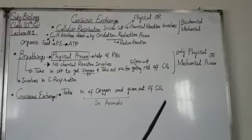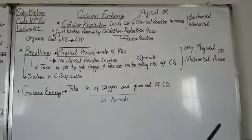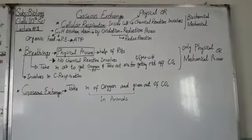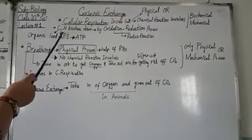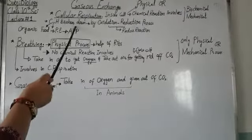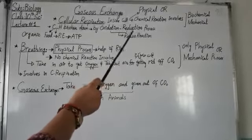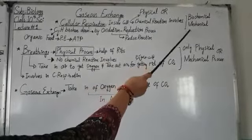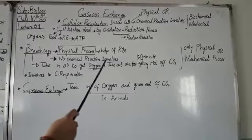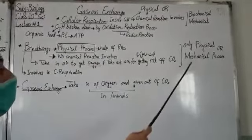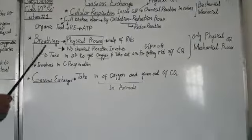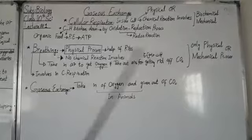Cellular respiration is a chemical process in which carbon-hydrogen bonds are broken and the potential energy is transformed into ATP form, which is then utilized as energy. Breathing is a purely physical and mechanical process because no chemical reaction is involved. Breathing is actually the basis for cellular respiration — when we don't do breathing, we don't perform cellular respiration, because oxygen obtained through breathing is needed at the cell level.